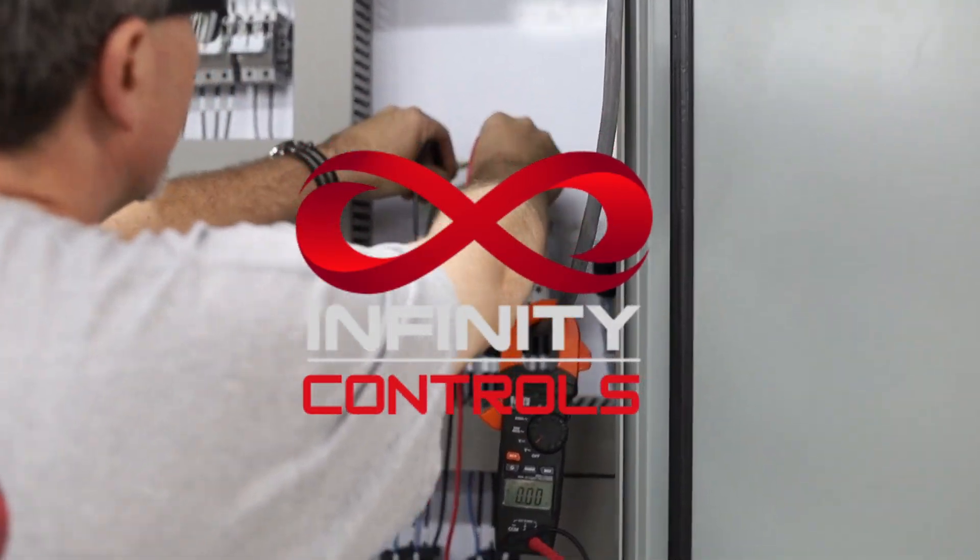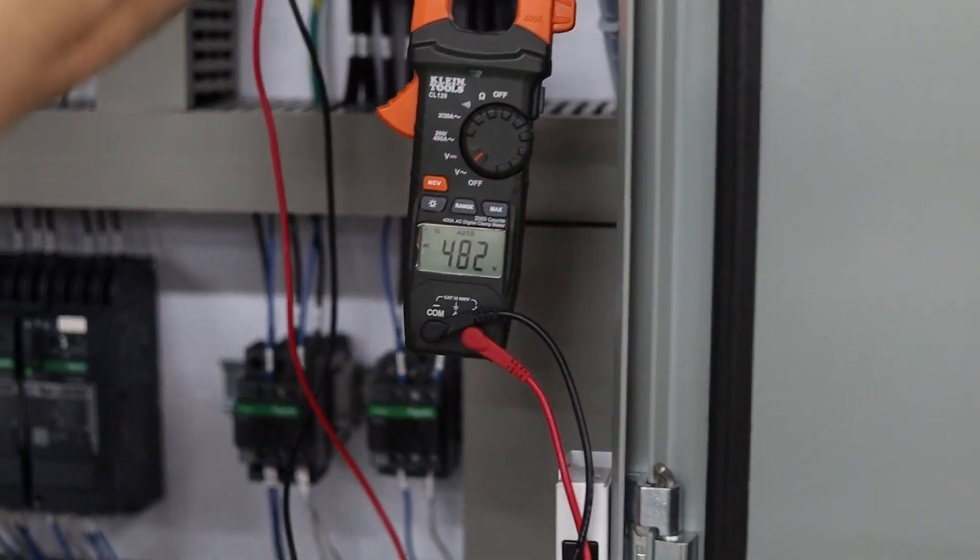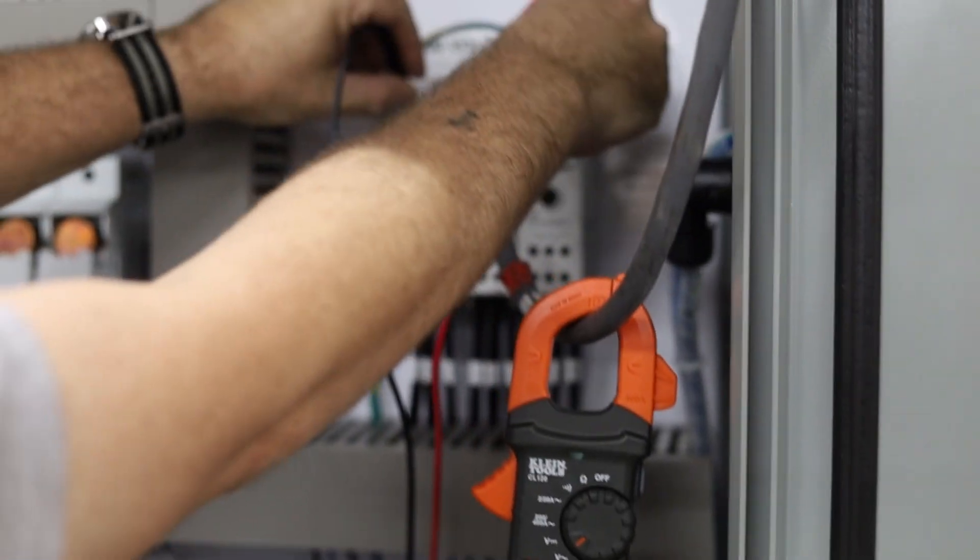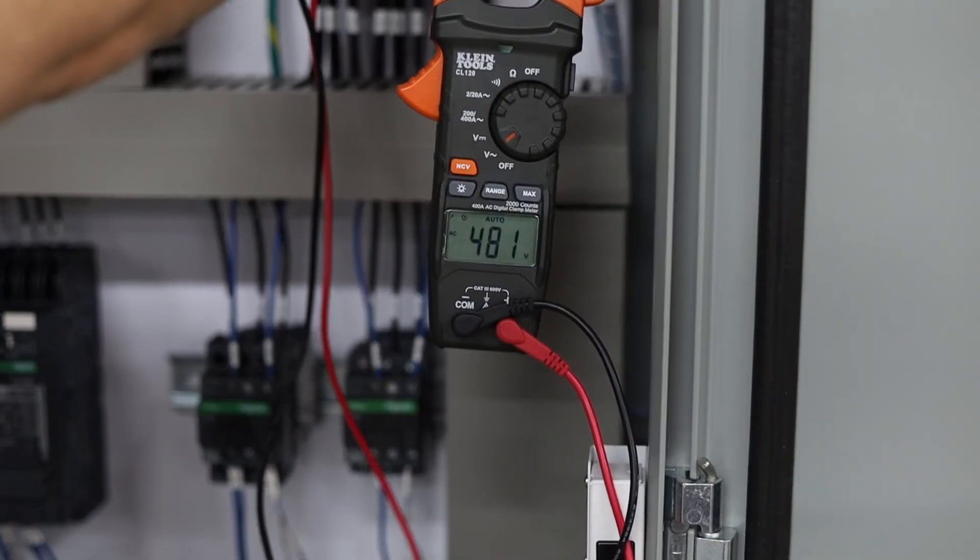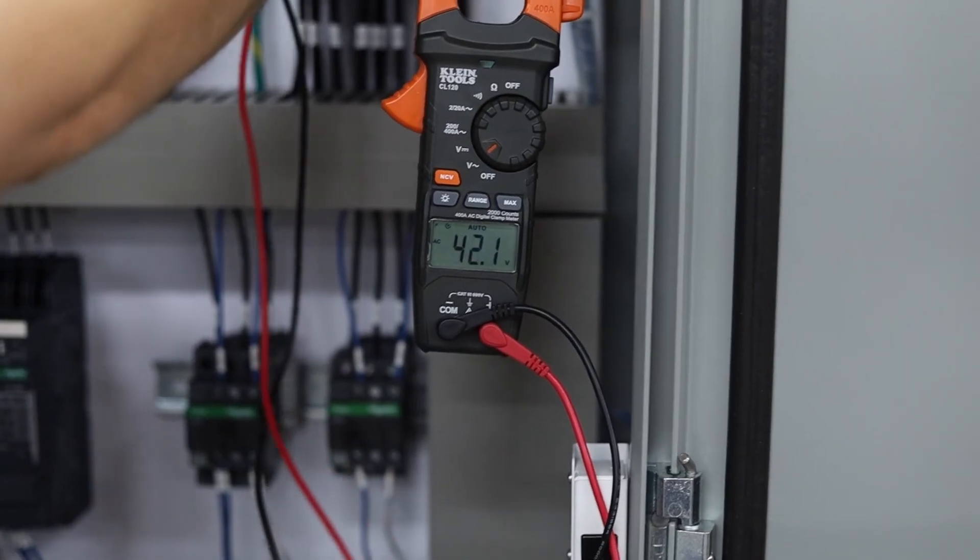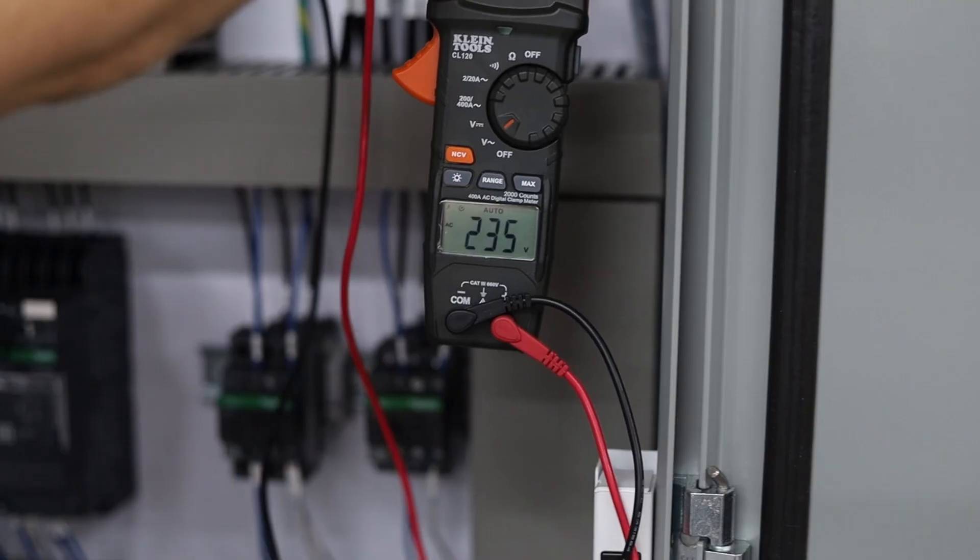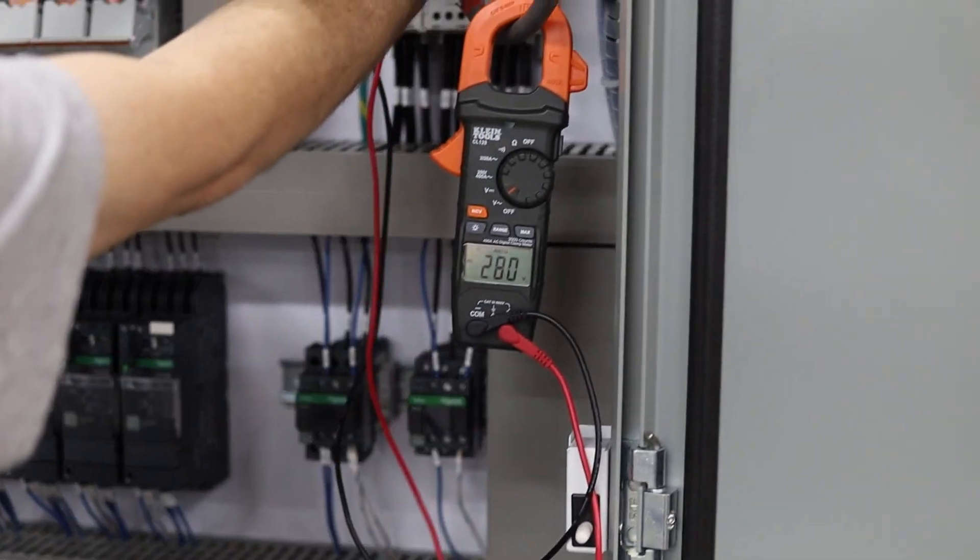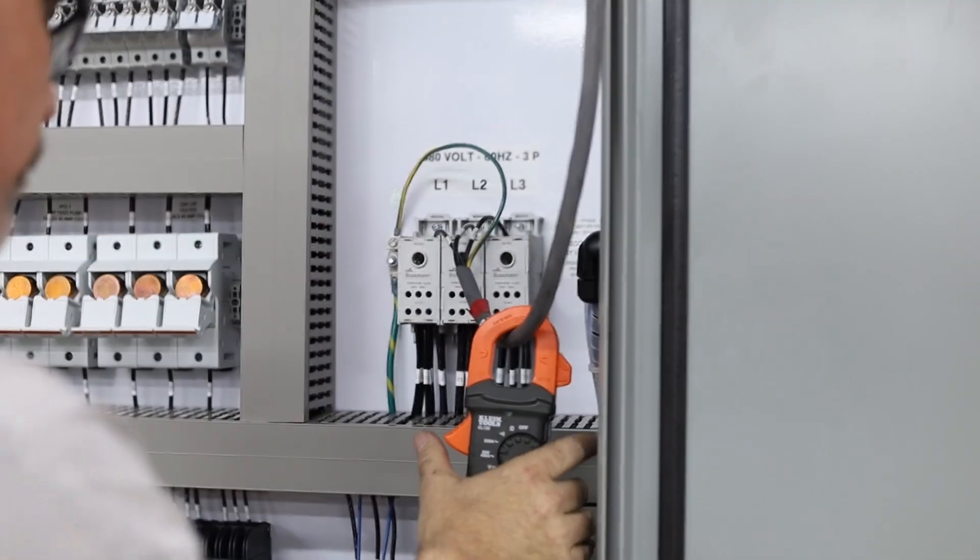We can check for voltages, phase to phase, 480, phase to phase, 480. Each leg to ground should be 2 something, 276, 275, 280. Alright so we're doing good, we got our input.